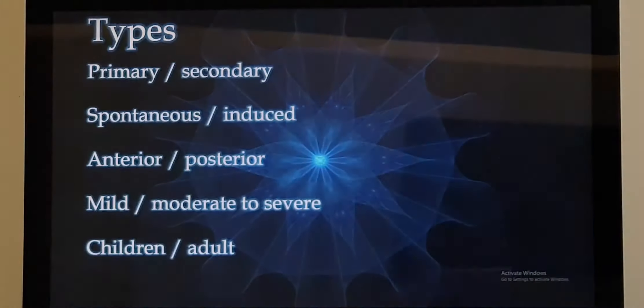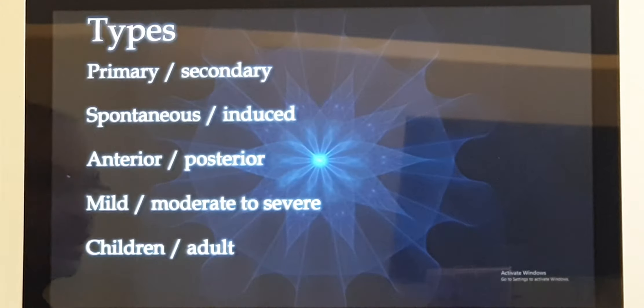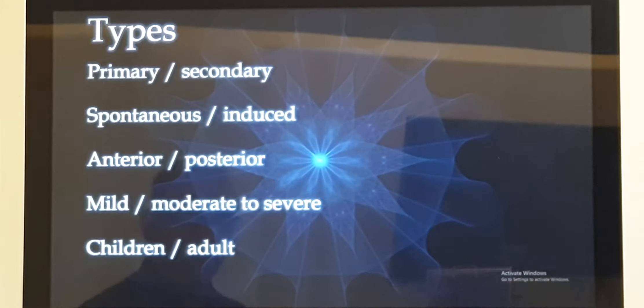Now let us see the different types of epistaxis. One, it can be primary or secondary. Primary means there is no known cause for the bleed. Secondary means there is some cause, like there is accelerated hypertension, or he has got mitral stenosis, or he is in cardiac failure, there is drug induced or drug overdose. There is multiple number of causes. So specific, you have a cause for it.